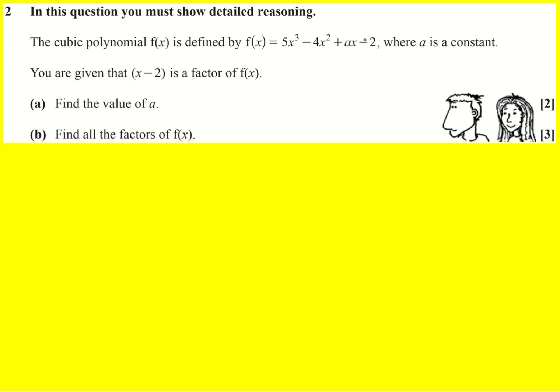We're given a cubic with a constant a that we don't know what it is, and we're told that x minus 2 is a factor of f of x. How do we work out a?